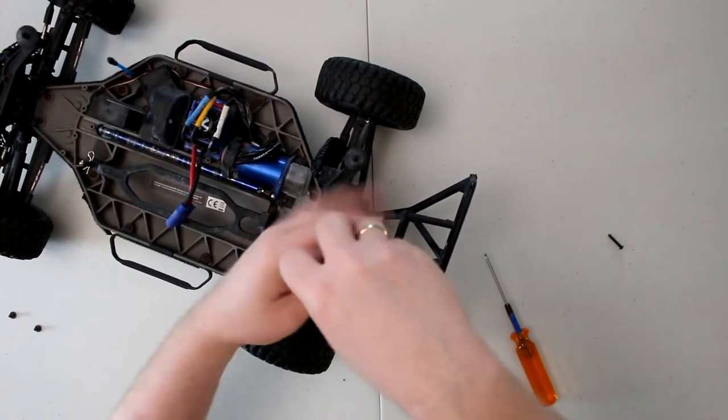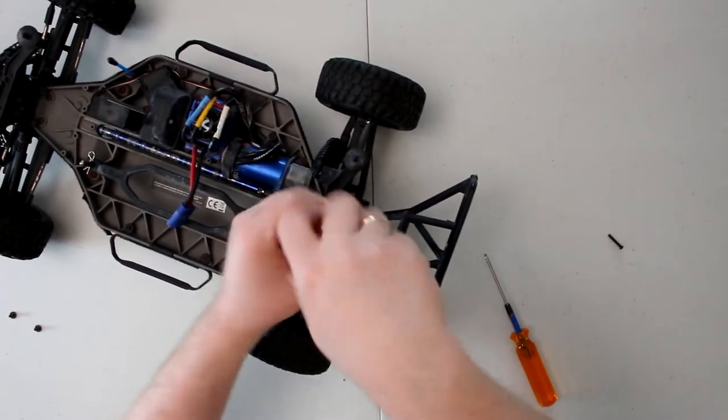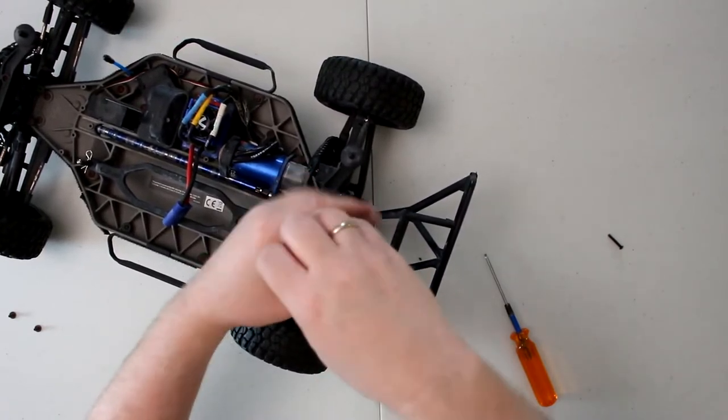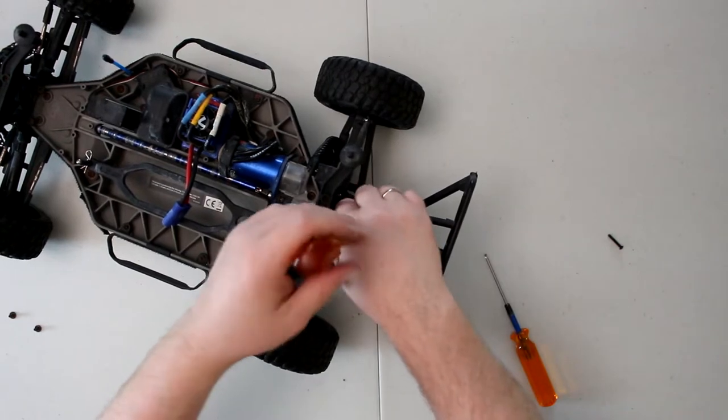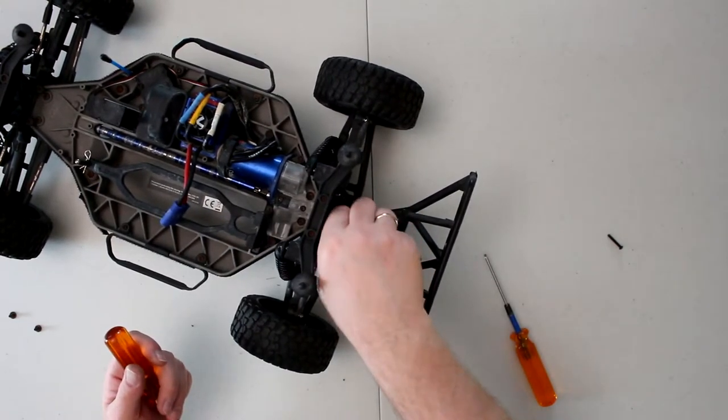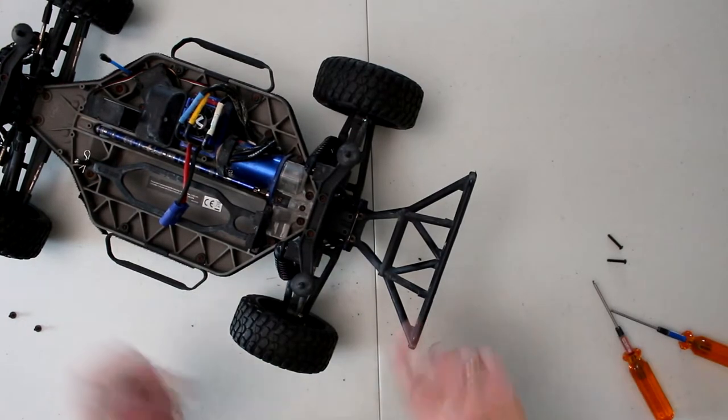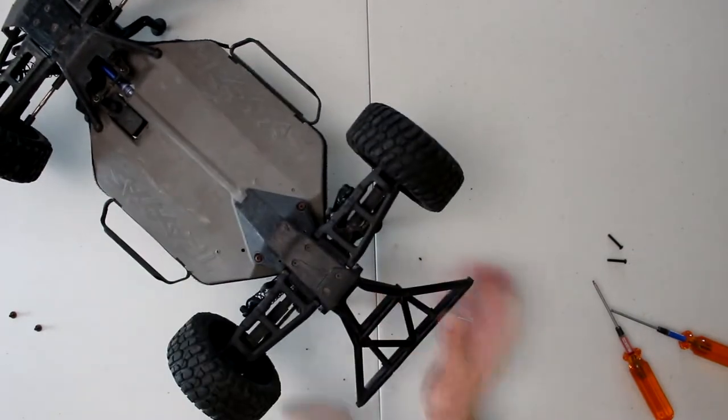Now what we're going to do is flip the vehicle upside down, and we have two more screws here that are 2mm.